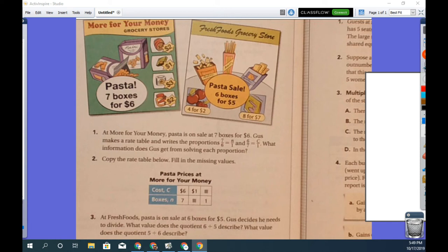Okay, folks. So this is the classwork for the day. We are finding unit rates or constants of proportionality. And in this case, we have two different grocery stores. One is more for your money.